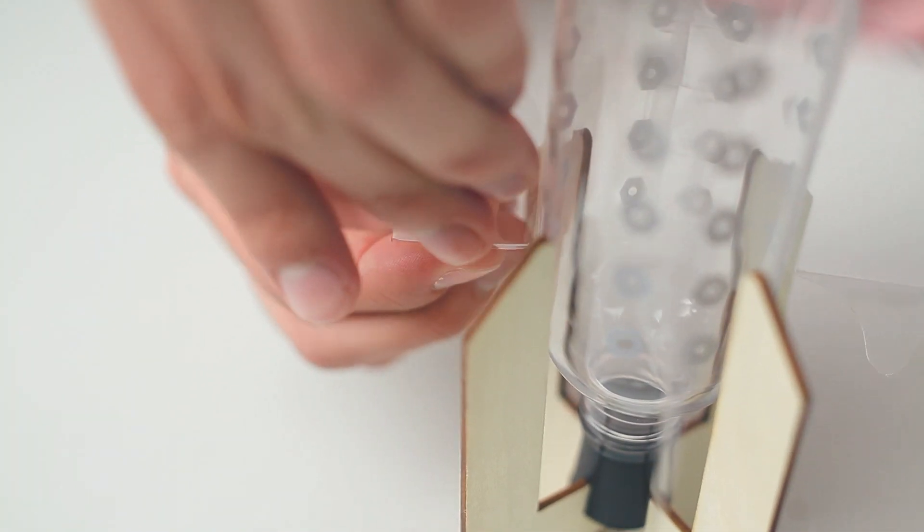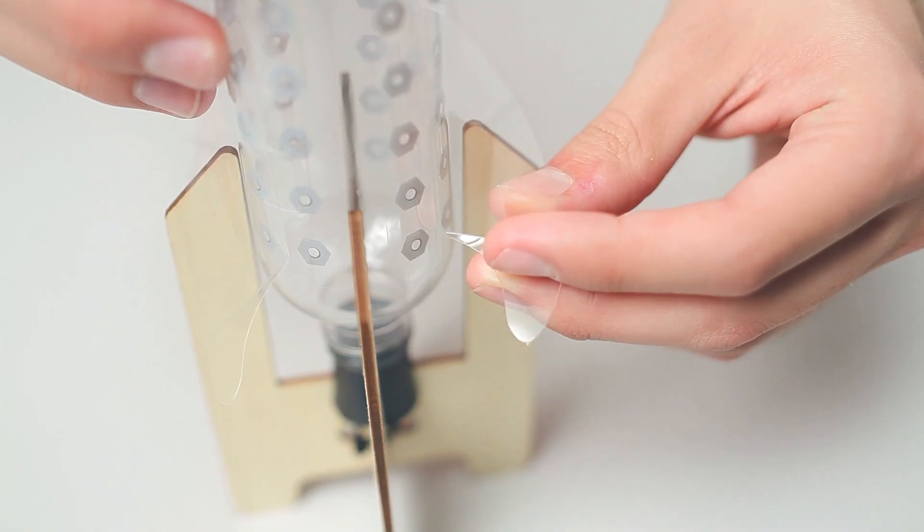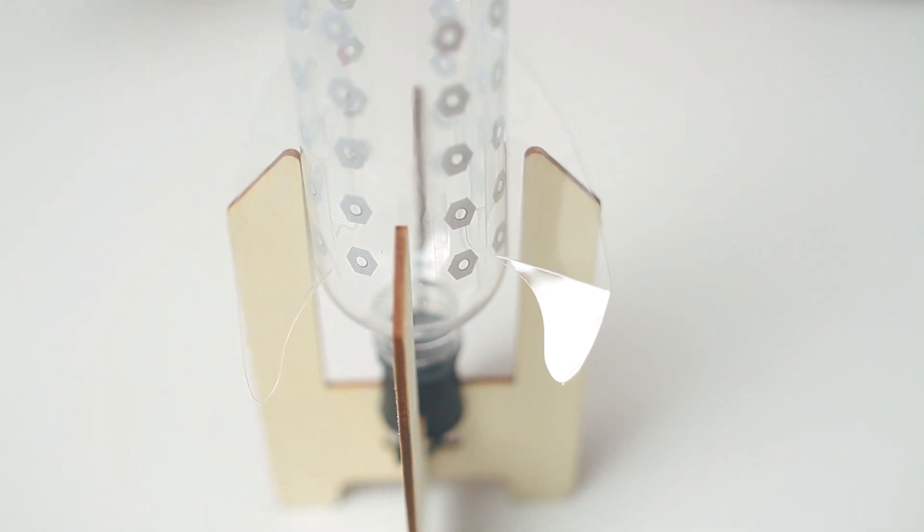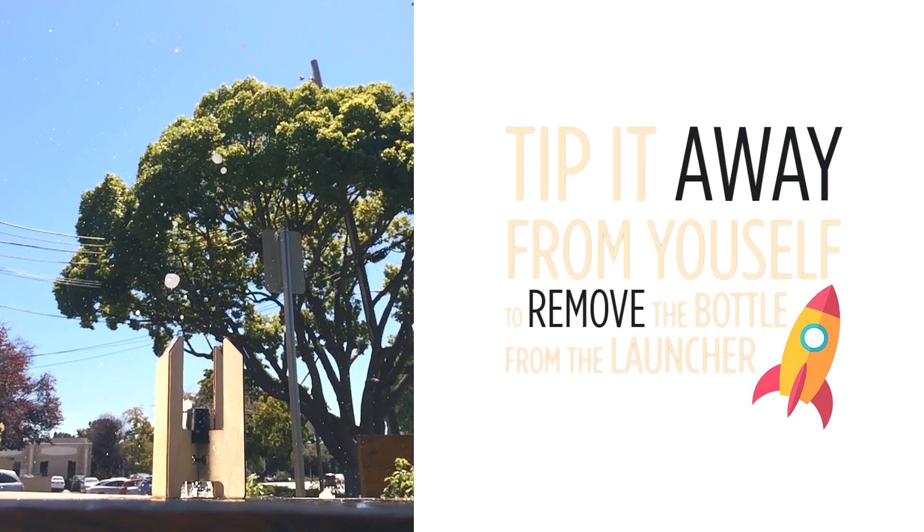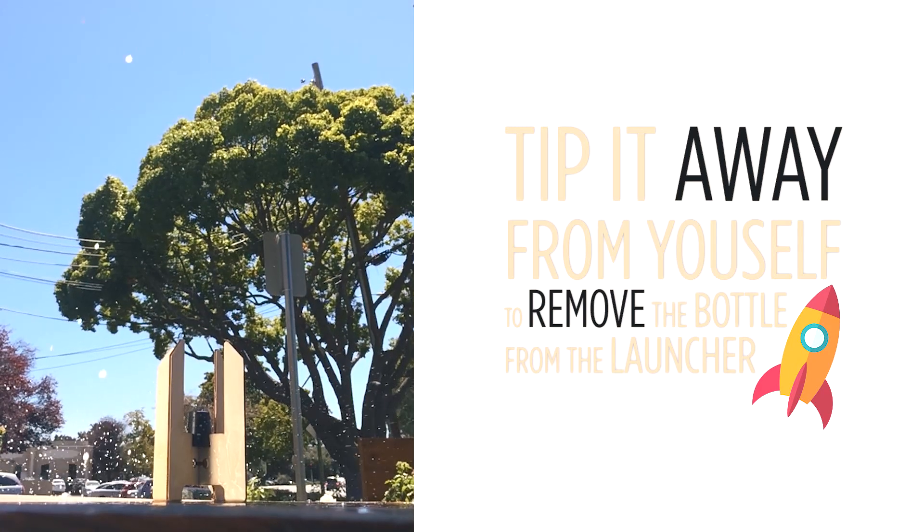Try adjusting the fins on your rocket to change the way that it launches. If you bend them all to one side, you can make it spin. If your rocket fails to launch, tip it away from yourself before removing it from the launcher.